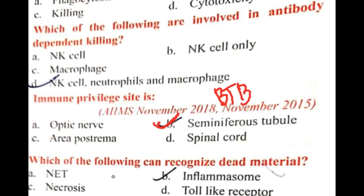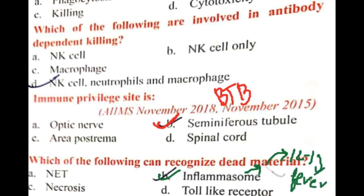Which of the following can recognize dead material? Dead material can be recognized by the inflammasome. The inflammasome is a protein complex that recognizes products of dead cells and some microbes, and induces the secretion of interleukin-1 (IL-1). This recognition of dead cells leads to production of IL-1, which causes fever.